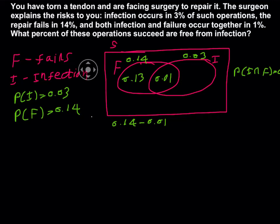Similarly, you have here total 0.03 and middle 0.01, therefore only infection should be 0.03 minus 0.01, that means 0.02.